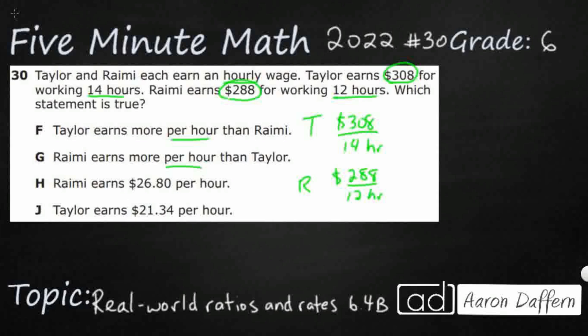We're going to take this 14, and we divide it into $308. 14 goes into 30 twice. That's 28. It looks like a nice, even $22 an hour. So, if you were to divide top and bottom by 14, we're going to make an equivalent fraction. This is going to be $22 per hour.